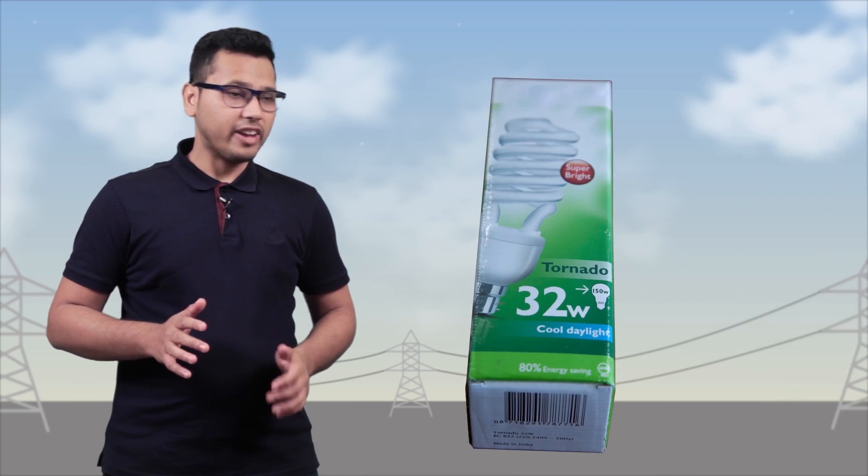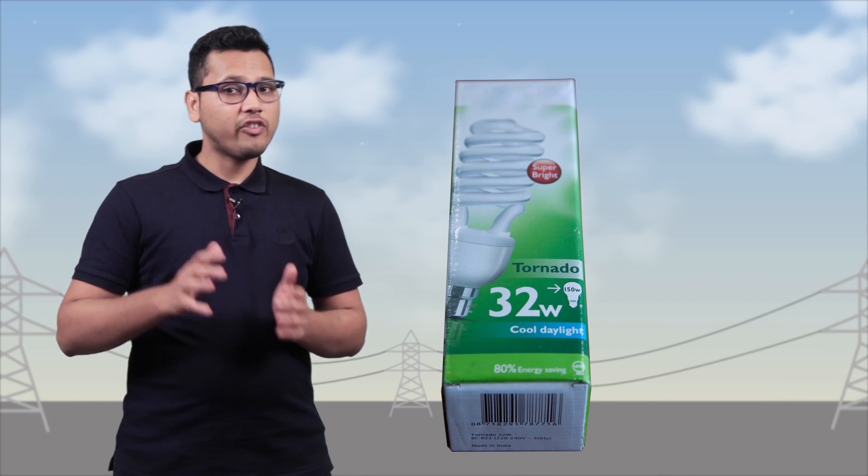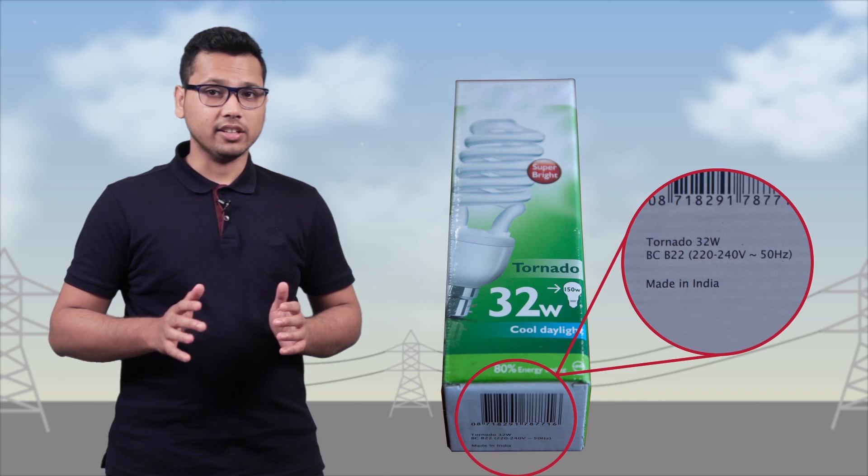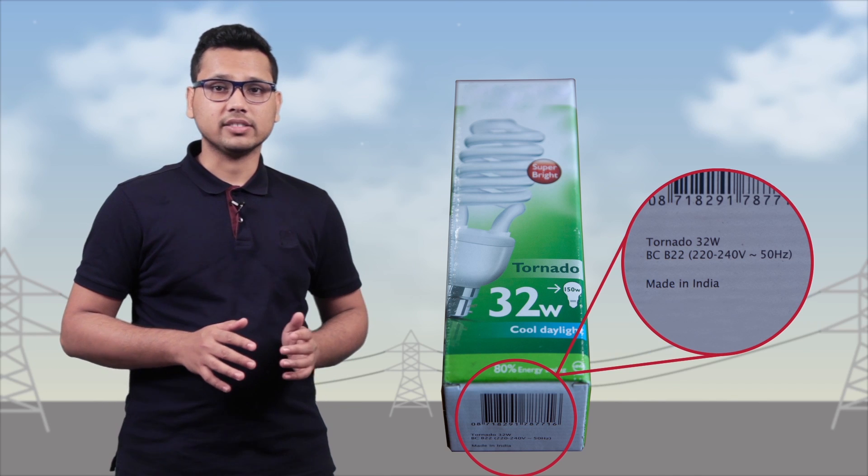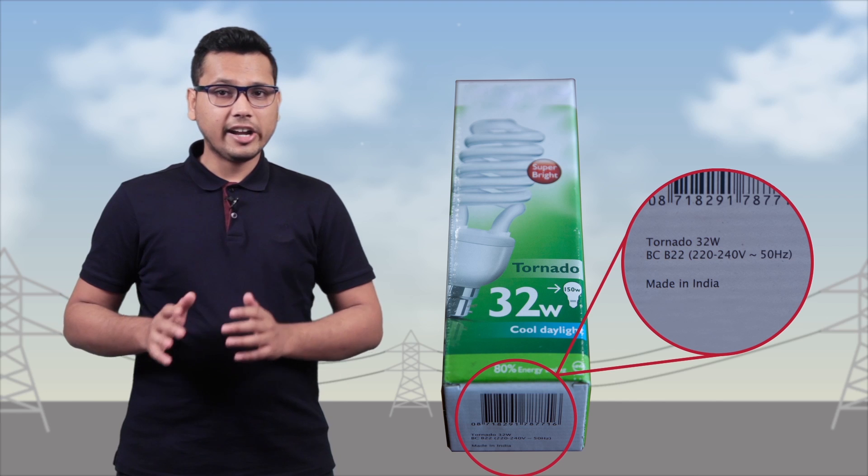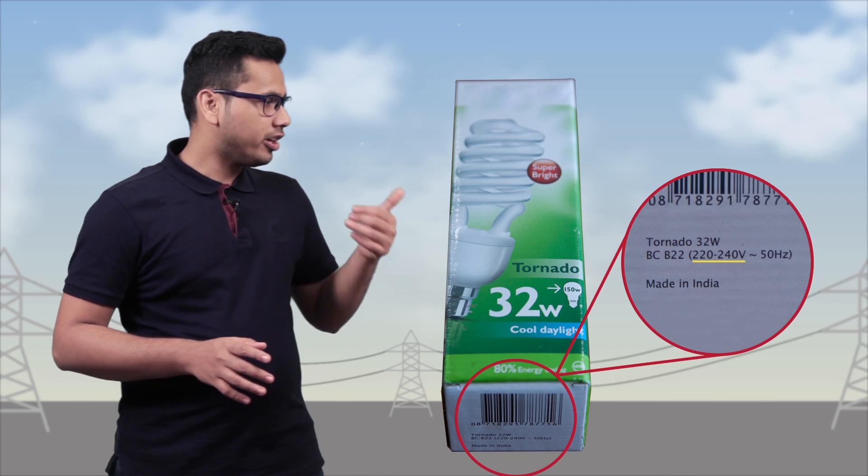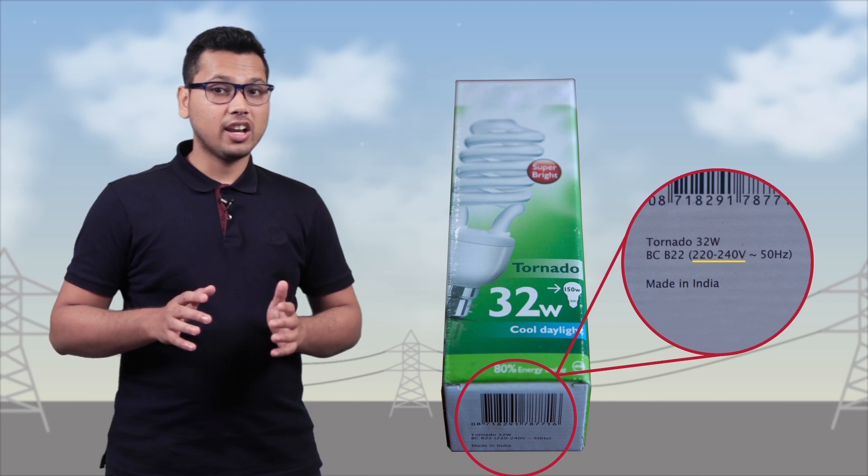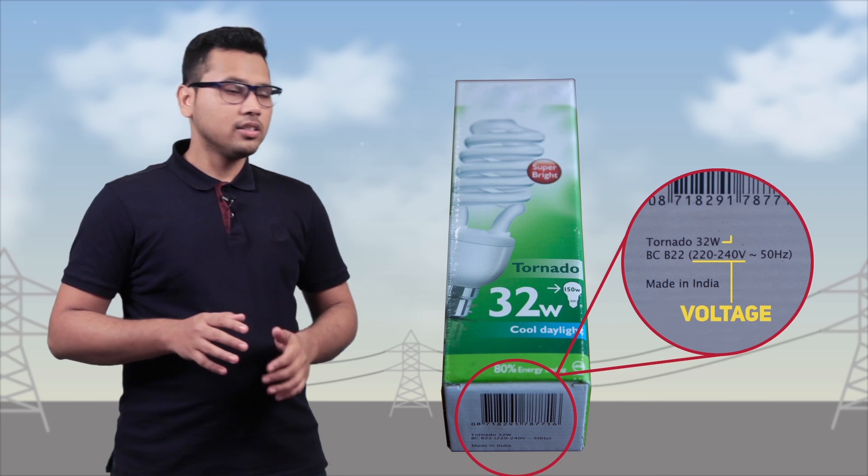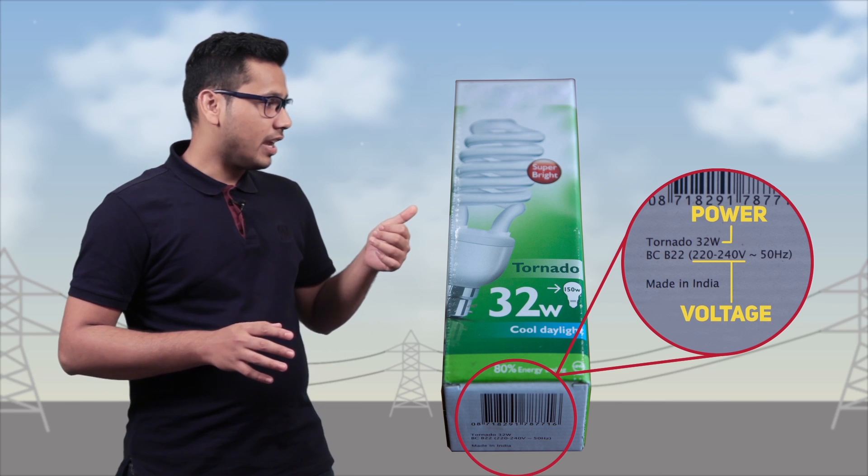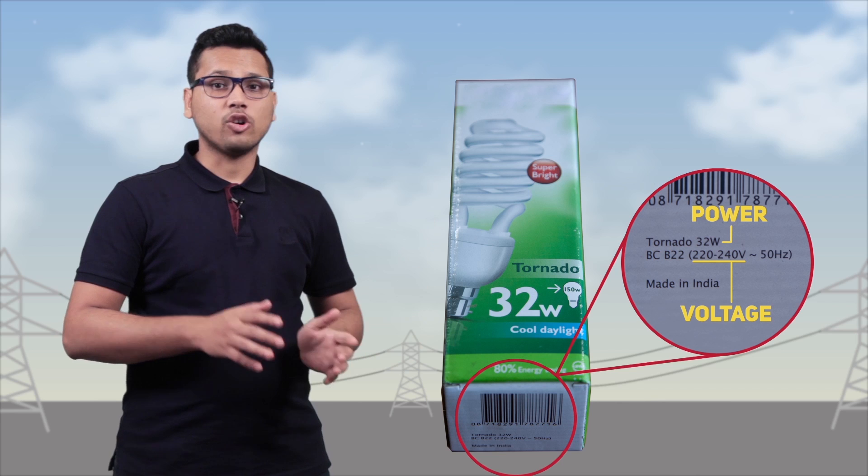If you observe the outer covering of an electrical appliance, you will find different ratings written on it. These ratings include the voltage on which the appliance works and the energy it consumes per second, which is called power.